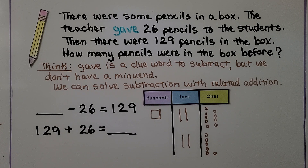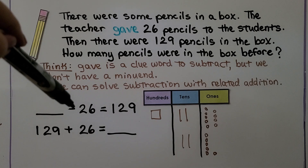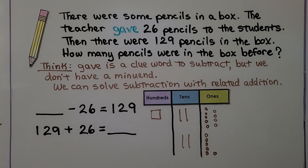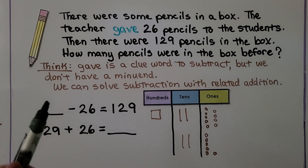This problem says there were some pencils in a box. The teacher gave 26 pencils to students. Then there were 129 pencils in the box. How many pencils were in the box before? We see 'gave' — she gave some away, so we know it's a subtraction problem. But we don't have a minuend; it says 'some pencils.' We don't know the minuend. Gave away means minus 26. We can solve this with related addition: if we add the subtrahend and the difference, we'll know the minuend.